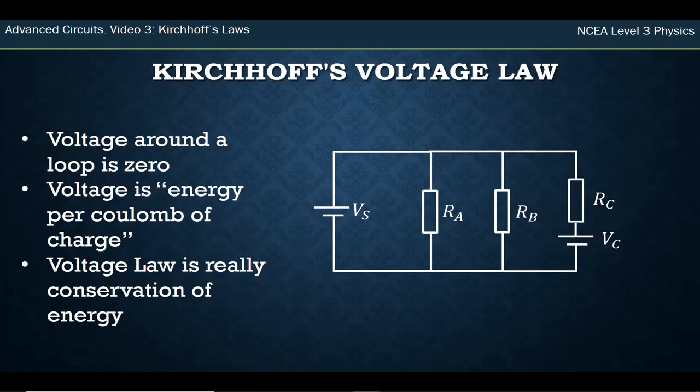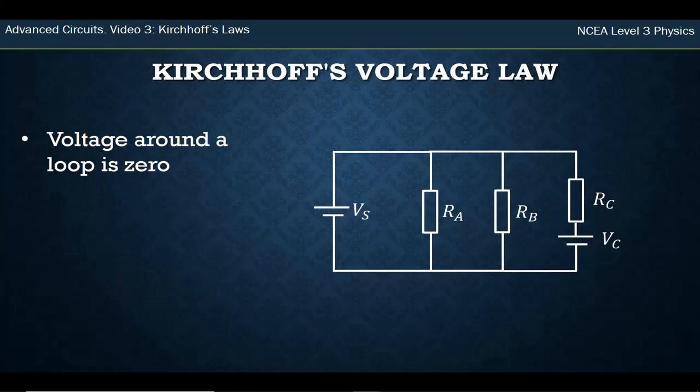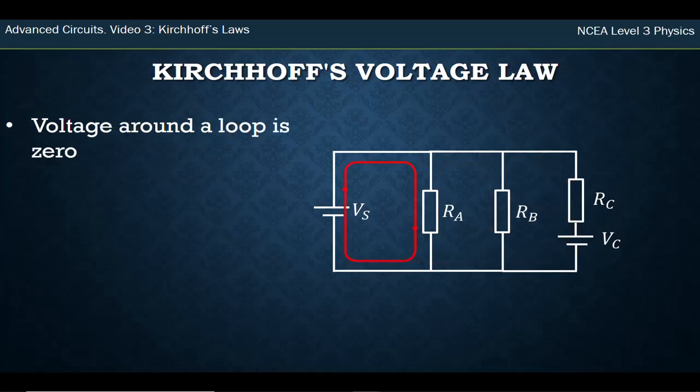Let's look at this using a very simple example. Voltage around a loop is zero. What is a loop? A loop is what you choose it to be. In this case there's actually quite a few loops you could choose. You could just choose the one on the left. You could choose this as the loop. It doesn't necessarily have to have a voltage source in it. This could be a loop, or this could be a loop on this side. There's a number of loops we could pick.